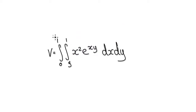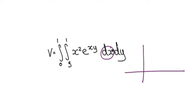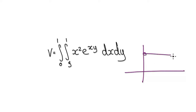But first, we need to understand what's going on here — we need to understand the region in which we're integrating over. Currently, as it stands, it's in the x direction first, which means it's moving along parallel to the x axis. If you're moving along in the x direction first, then it's got to be x equals something.